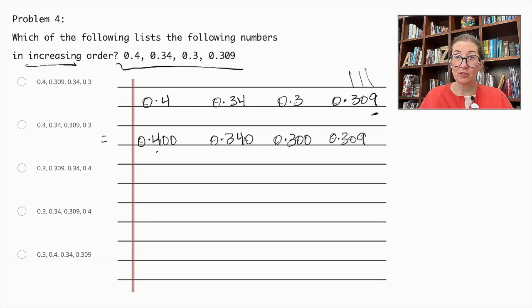The four in the tenth spot shows us that it's the largest number. So we can put that as the last number. Now we're going to look for the lowest number. So we've got three and four after it. So it's not that. Three and then zero. That's promising. And then zero. So that looks to be the lowest. But let's look at the next one. 309. Nine is greater than zero.